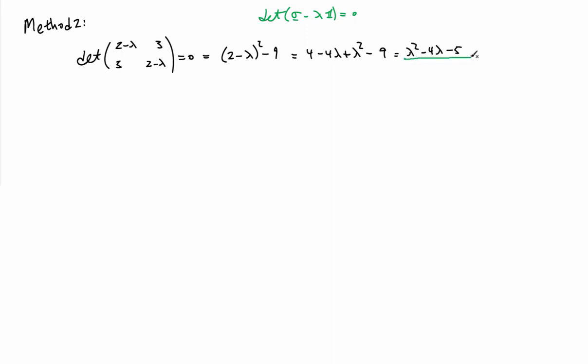I end up with this quadratic polynomial, lambda squared minus 4 lambda minus 5, and that needs to equal 0. So I can use the quadratic formula.